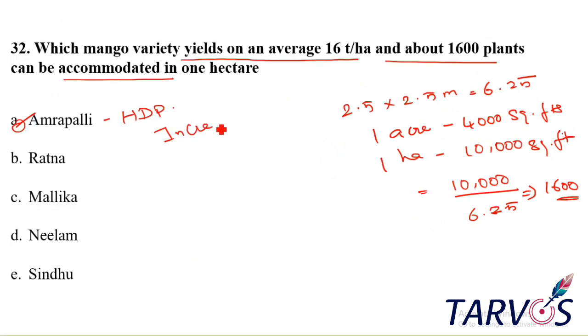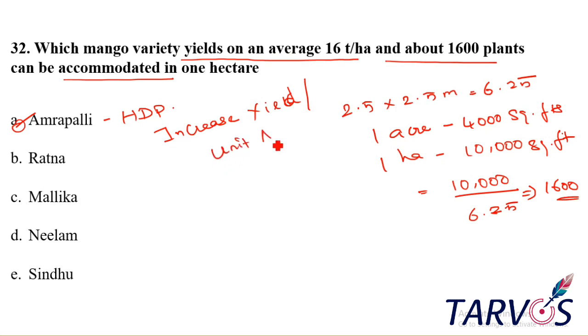The high-density formula increases the yield per unit area. That is the high-density planting concept.